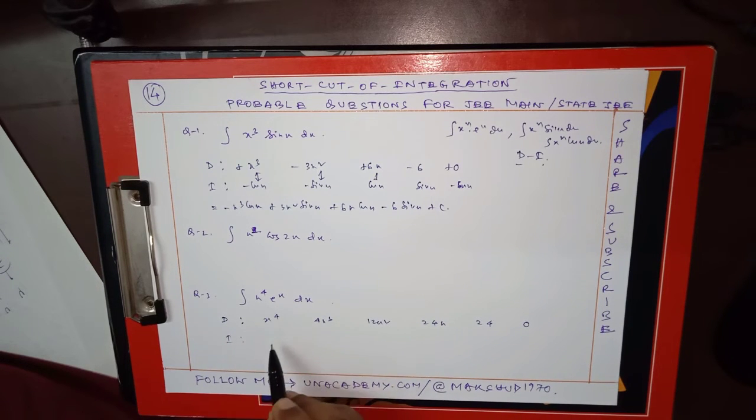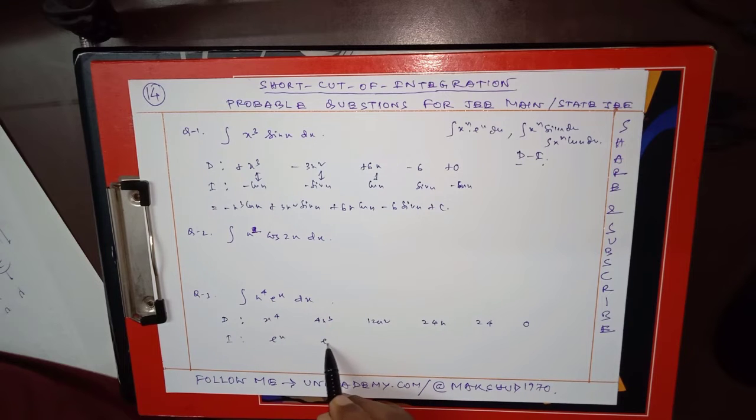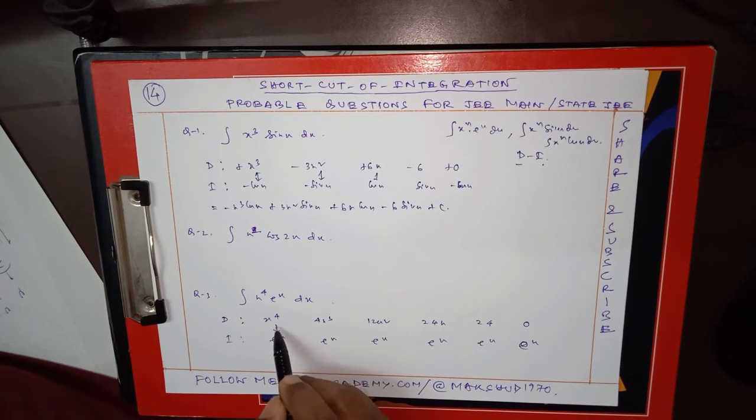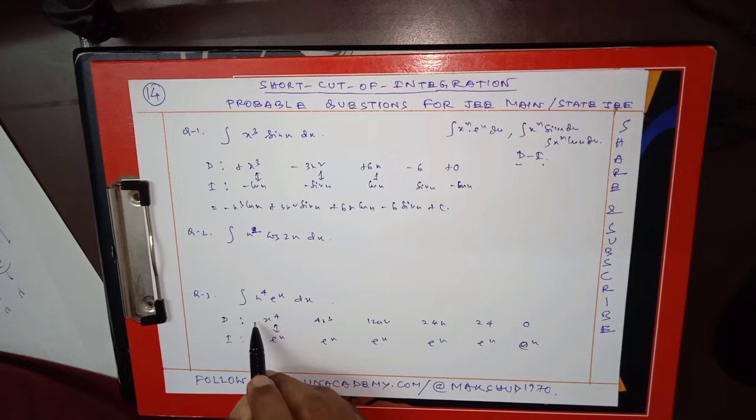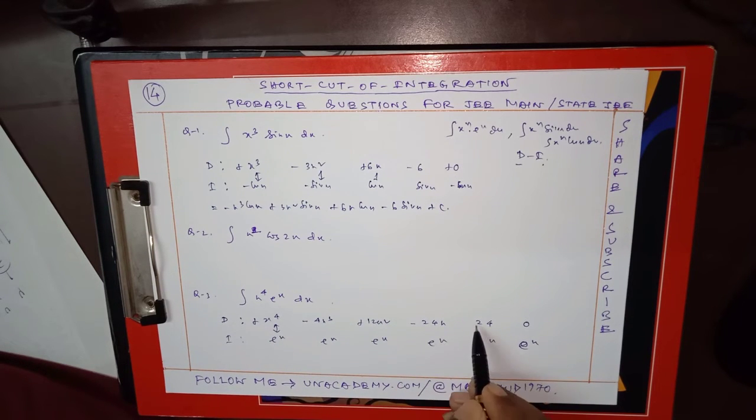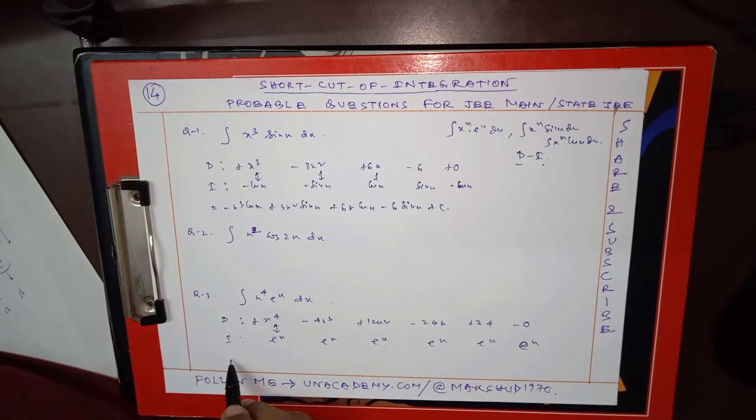Now integrate. The integration of e^x is e^x itself. So this is e^x, this is e^x. Now you have to multiply this and the order will go: this is plus, this is minus, this is plus, this is minus.